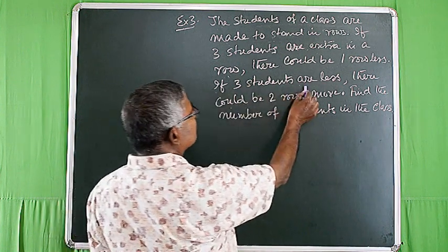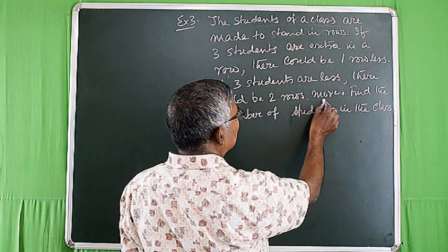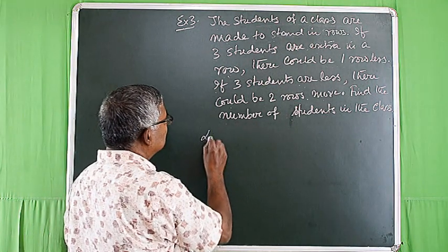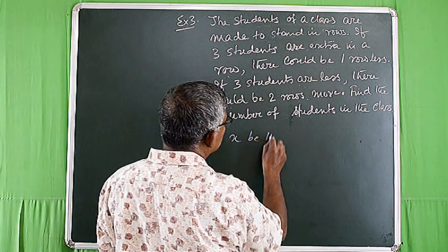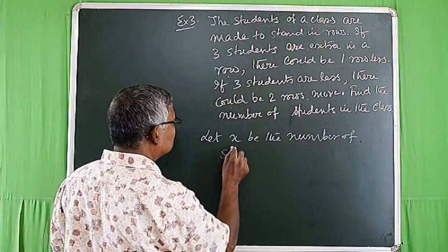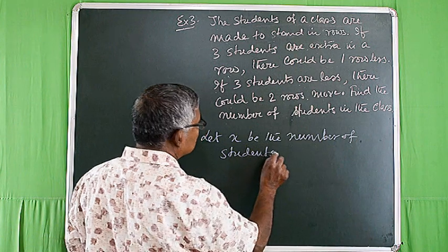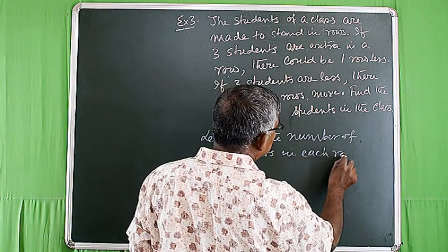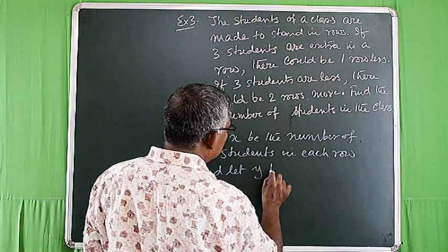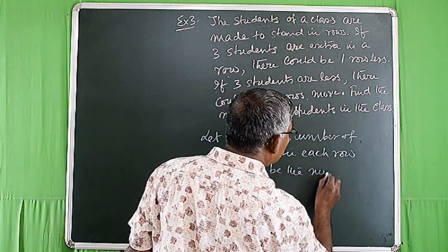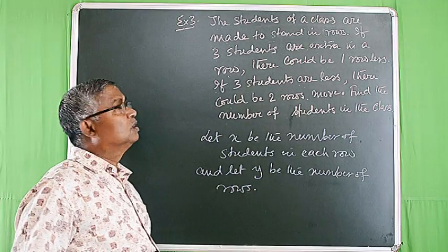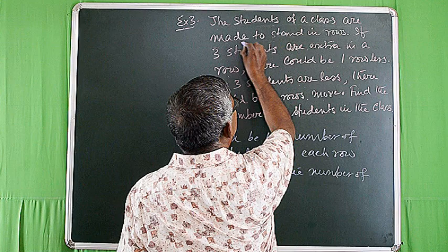If three students are extra in a row there could be one row less. If three students are less then there could be two rows more. Find the number of students in the class. Let x be the number of students in each row and y be the number of rows.